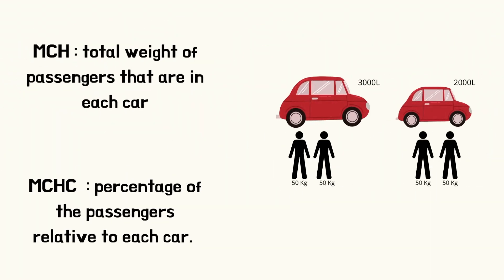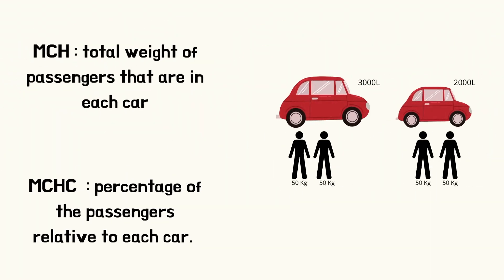In this case, the MCH would tell you the total weight of passengers in each car, while the MCHC would tell you the percentage of the passengers relative to each car.